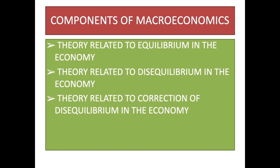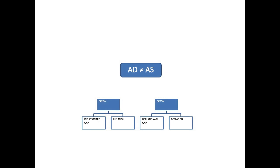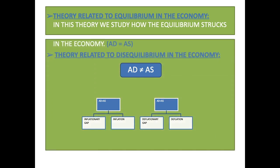The first component is theory related to equilibrium in the economy. Equilibrium means a balancing situation in the economy. Unlike microeconomics where we studied individual demand and supply, here we study the economy as a whole — the aggregate factors. The demand of all consumers in the economy is called aggregate demand, and the supply of all producers is called aggregate supply. This theory studies how the balance situation is struck in the economy — at which point aggregate demand equals aggregate supply.